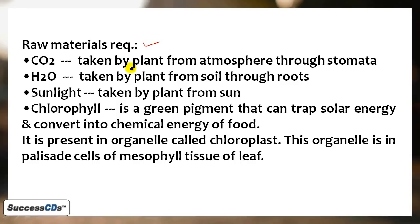The raw materials plant needs for photosynthesis are carbon dioxide, which plant takes from atmosphere through stomata. Next is water, which plant absorbs from soil through roots. Third we have sunlight, whose only source is sun. Next we have chlorophyll.